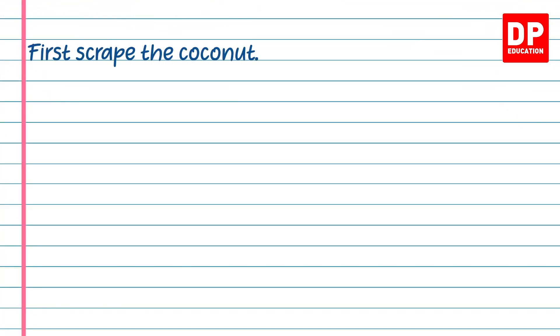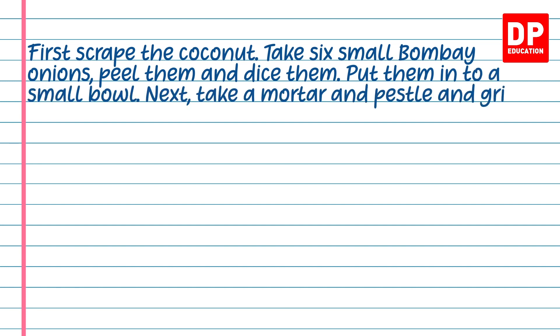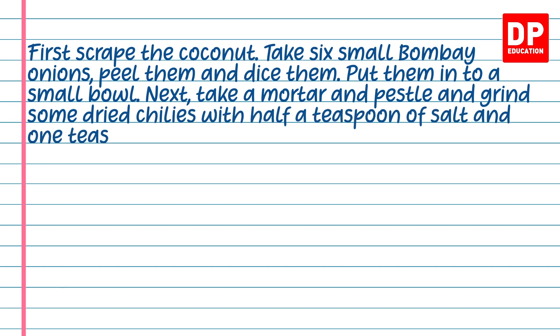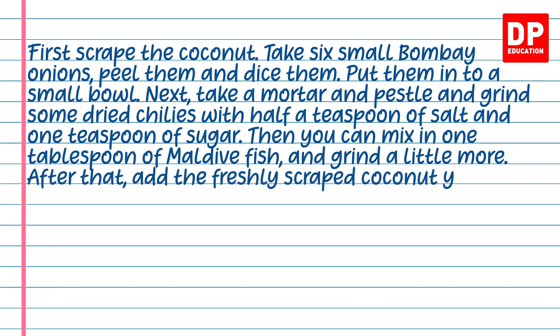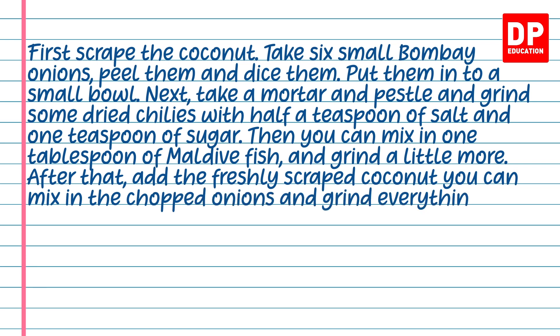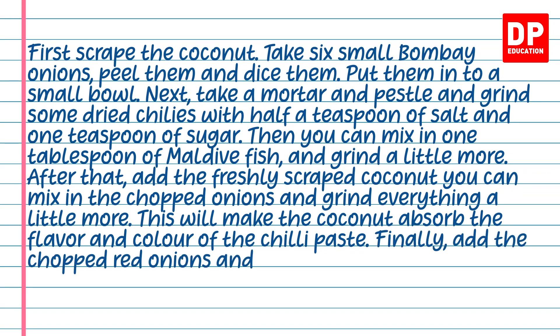Using the sequences and actions we learned earlier, and writing everything in the imperative, let's complete the recipe together. First, scrape the coconut. Take six small Bombay onions, peel them and dice them, and put them into a small bowl. Next, take a mortar and pestle and grind some dried chillies with half a teaspoon of salt and one teaspoon of sugar. Then mix in one tablespoon of Maldive fish and grind a little more. After that, add the freshly scraped coconut, mix in the chopped onions and grind everything a little more — this will make the coconut absorb the flavour and colour of the chilli paste. Finally, add the chopped red onions and mix well.